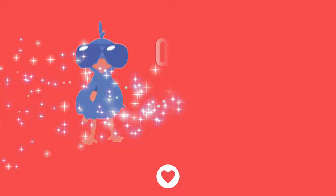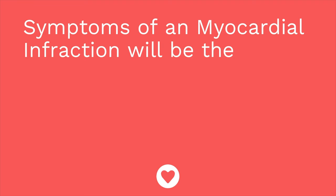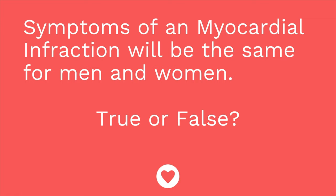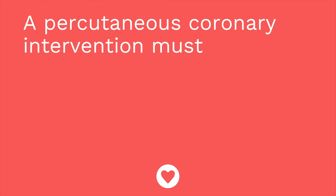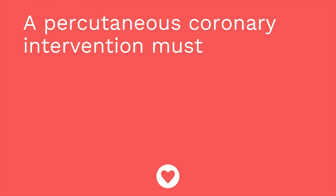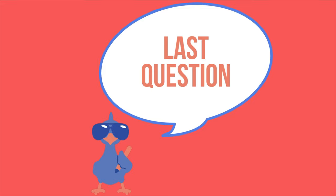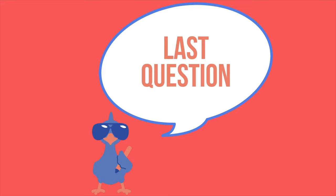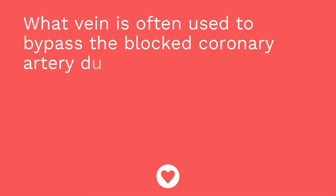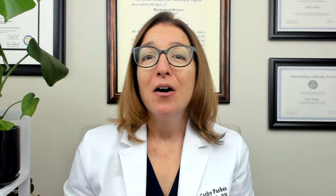Time for a quiz — I have three questions for you. Question one: symptoms of a myocardial infarction will be the same for men and women — true or false? The answer is false; women often have symptoms such as nausea and vomiting, fatigue, and pain in their back, shoulders, or jaw. Question two: a percutaneous coronary intervention must be performed within blank hours of the onset of MI symptoms. The answer is two. Question three: what vein is often used to bypass the blocked coronary artery during a CABG procedure? The answer is the saphenous vein.